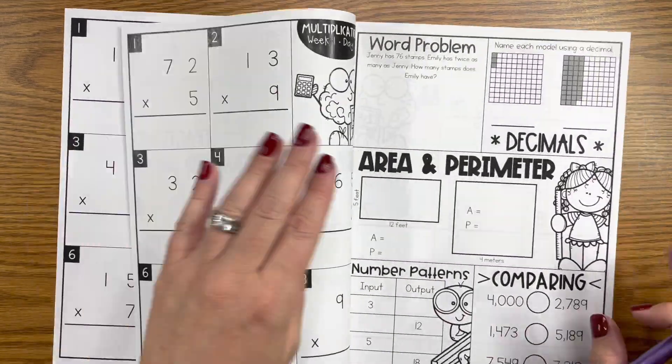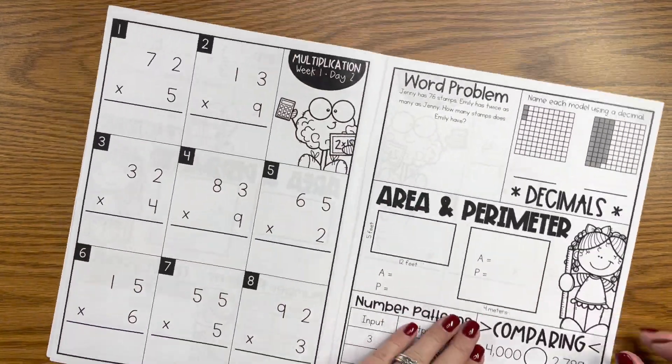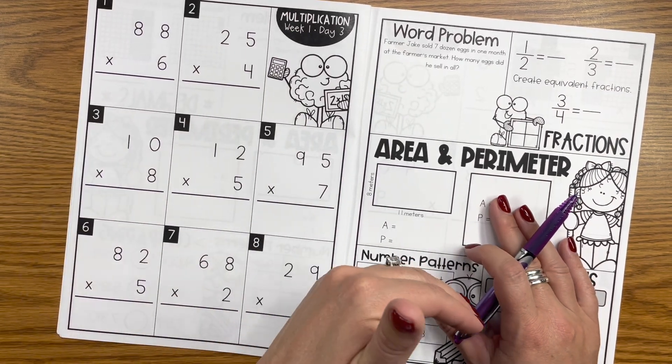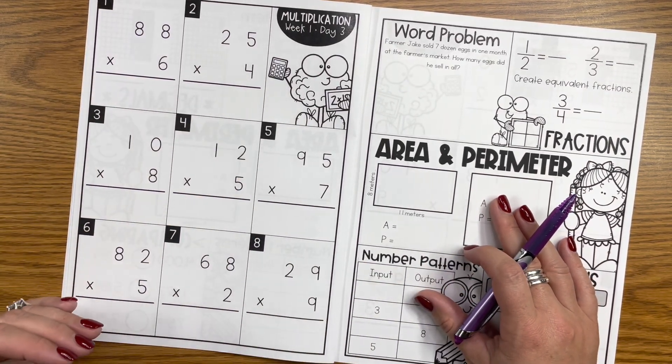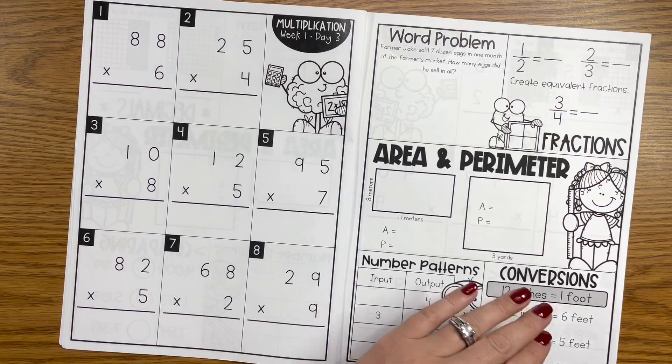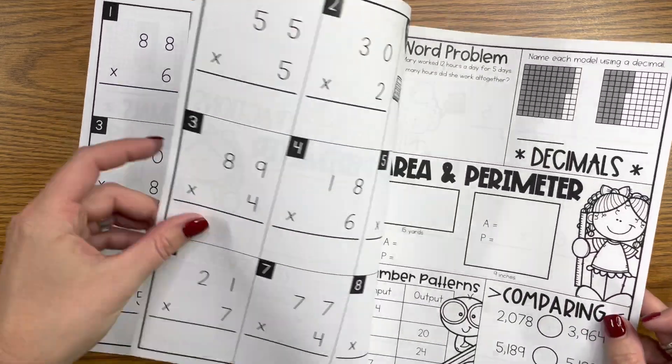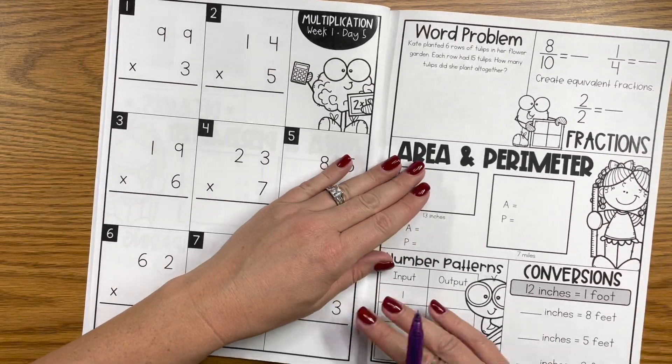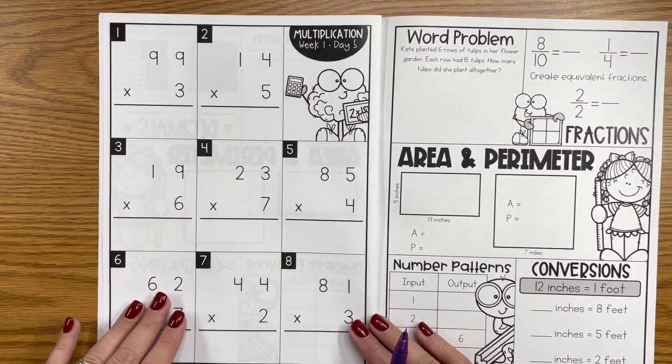That is the same every single day of the week, and really the only thing that's going to change is when you hit that next set of 10 and maybe you add another digit like three digit by one or two digit by two digits. Otherwise day in and day out that left hand side of the page will stay the same.